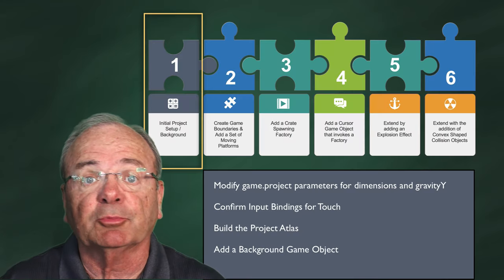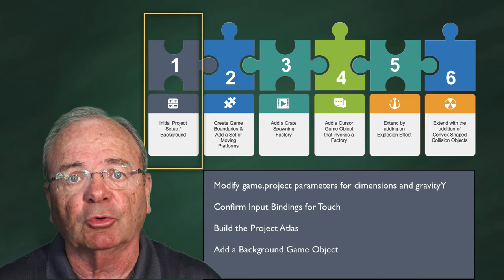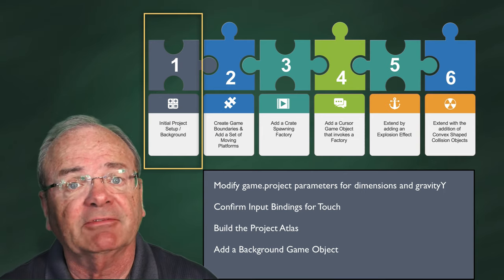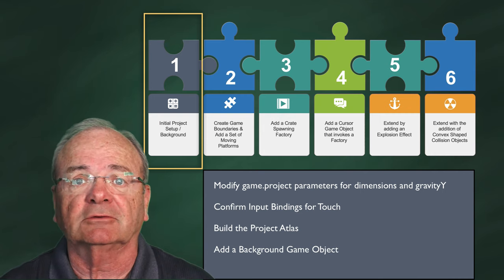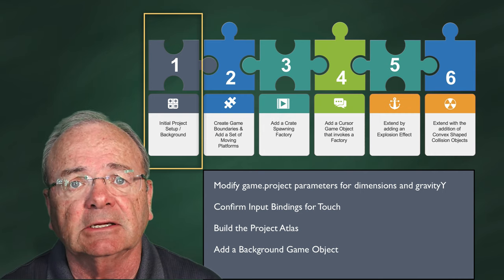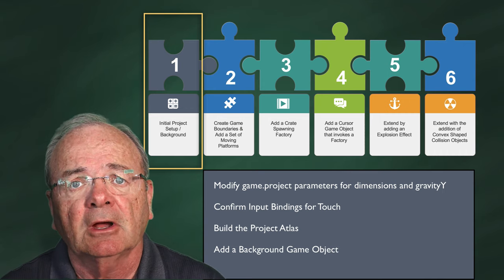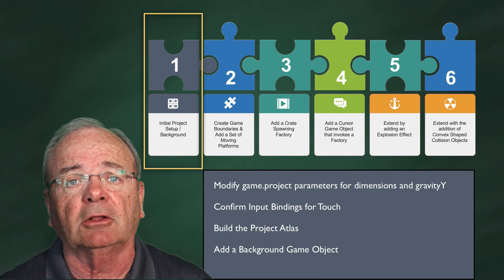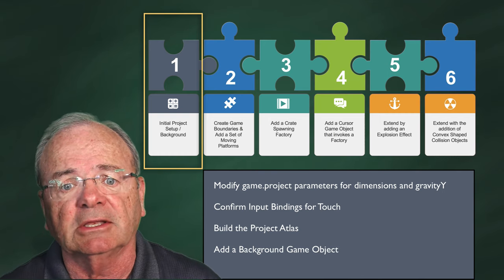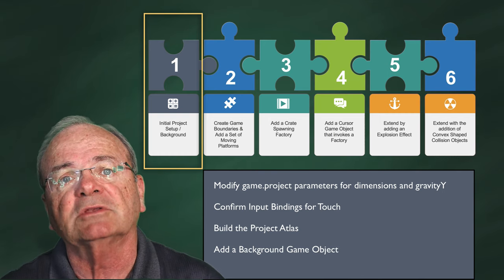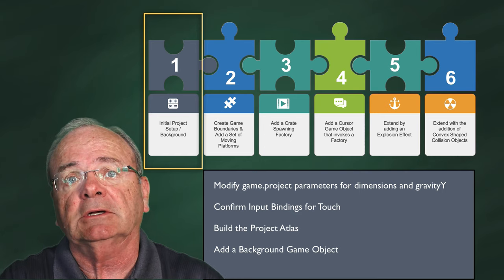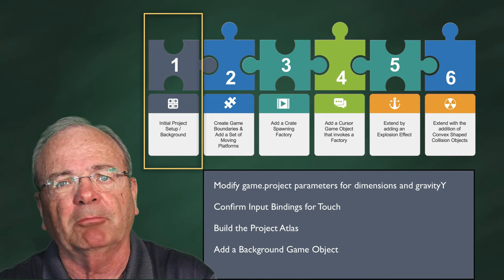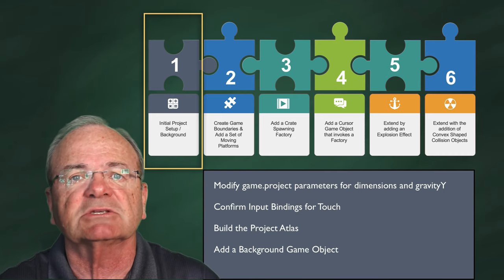Phase one is our initial project setup. Go ahead and start with an empty template, give it the name you'd like — I've called mine tutorial five physics — and save it to your desktop. In this phase we're going to modify a couple of parameters inside the game.project file, verify input bindings, add our images folder, create our atlas from that, and then create a simple background object as a basis for the game.